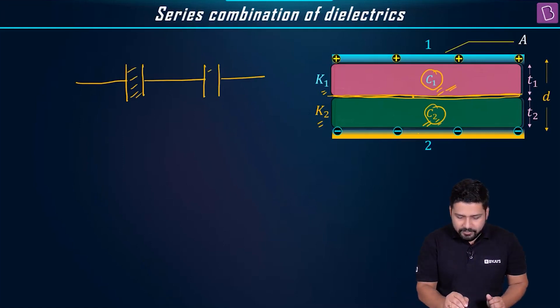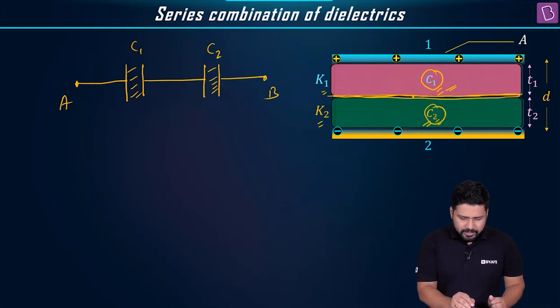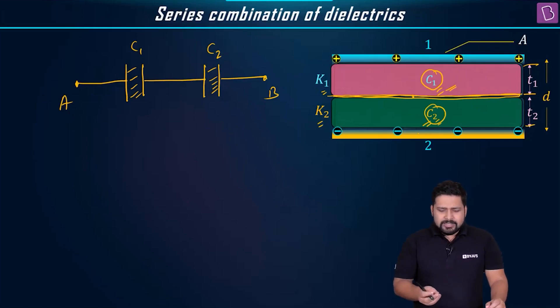Of course, the dielectrics are filled. This is having capacitance c1, this is having capacitance c2, they are connected between the two plates A and B. The first one is having a dielectric constant of k1, the second one is having a dielectric constant of k2. This is till distance t1 and this is till t2. We have used it such that the entire volume is covered, the entire volume is occupied.